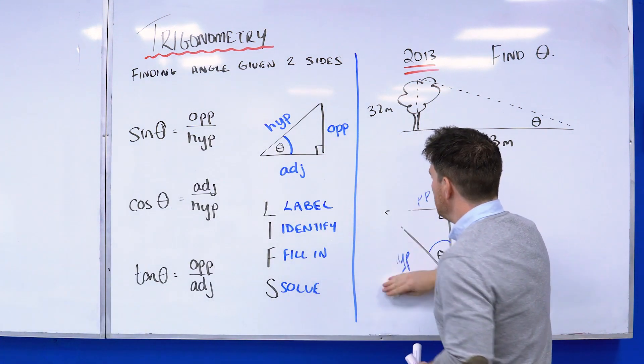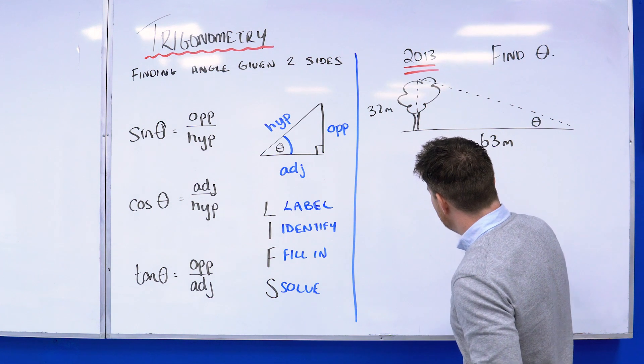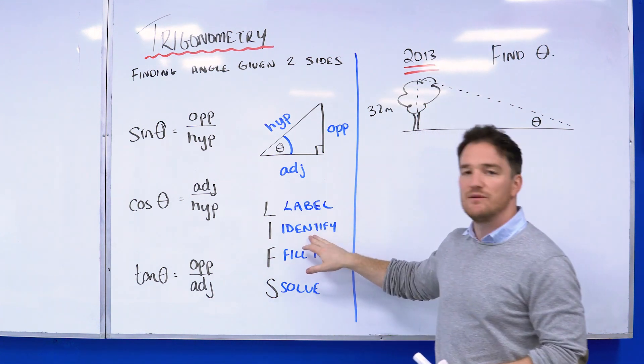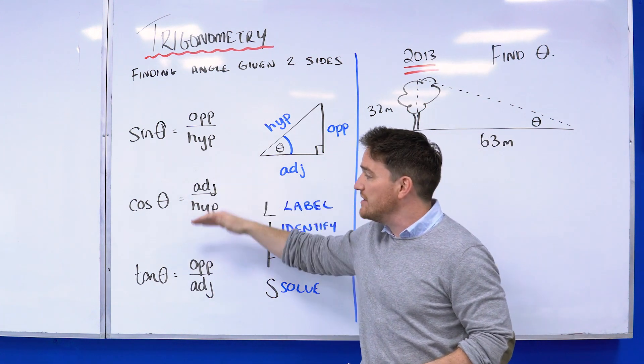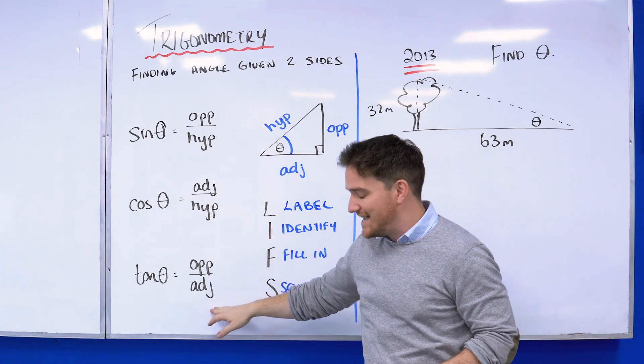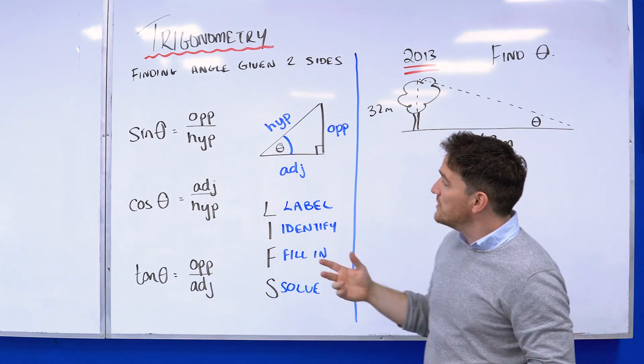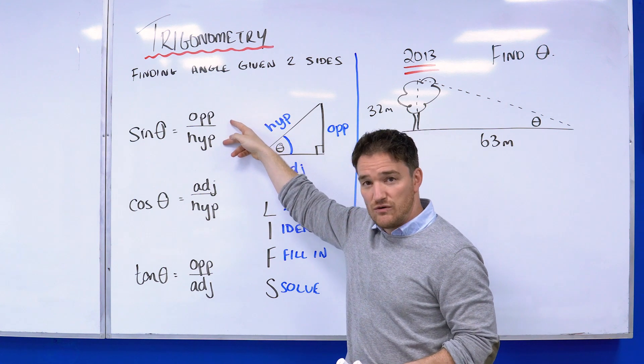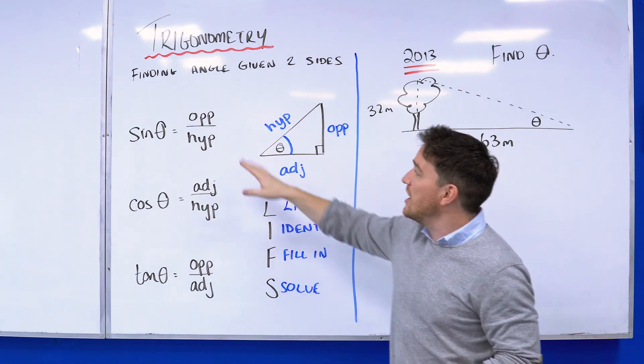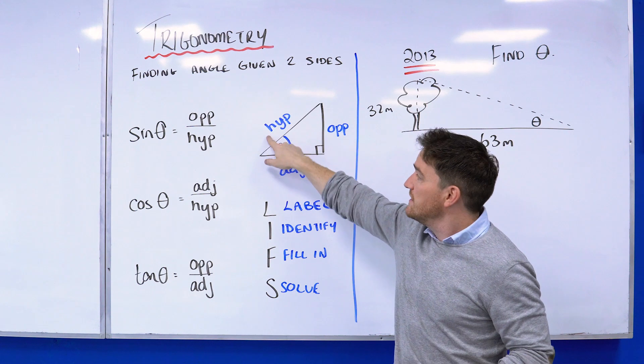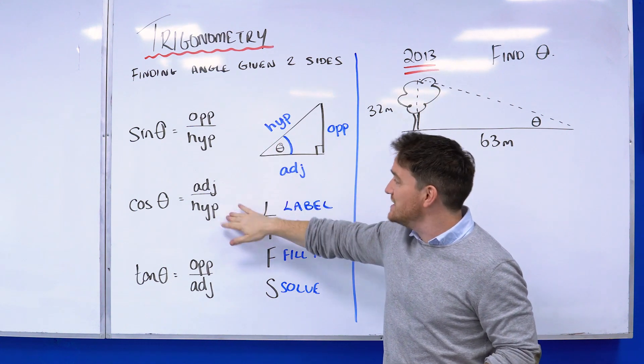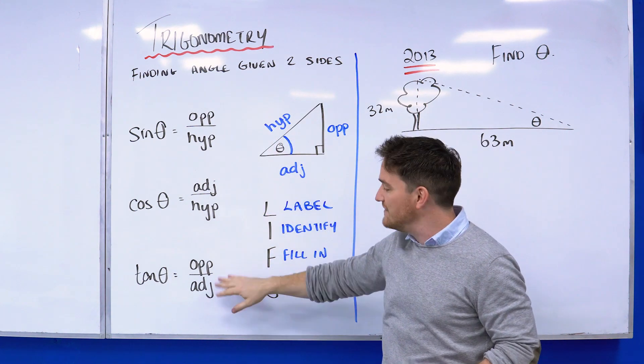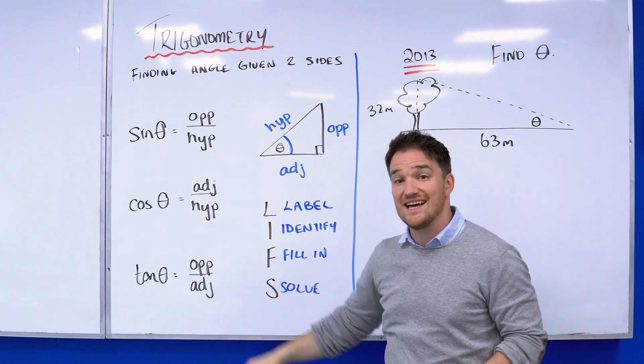Once you've labeled it, you're going to identify what equation you're using: am I using sine, cosine, or tan? To find the angle, you look at which two sides you're given in the question. If you're given the opposite and the hypotenuse, use sine; if you're given the adjacent and hypotenuse, use cosine; and if you're given the opposite and adjacent, use tan.